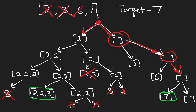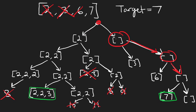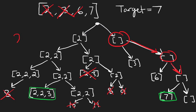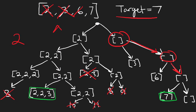For time complexity: at each step we make two decisions, so the tree has 2^h nodes where h is the height. Since all values are at least one, the height is at most the target value t. So the time complexity is O(2^t) where t is the target.